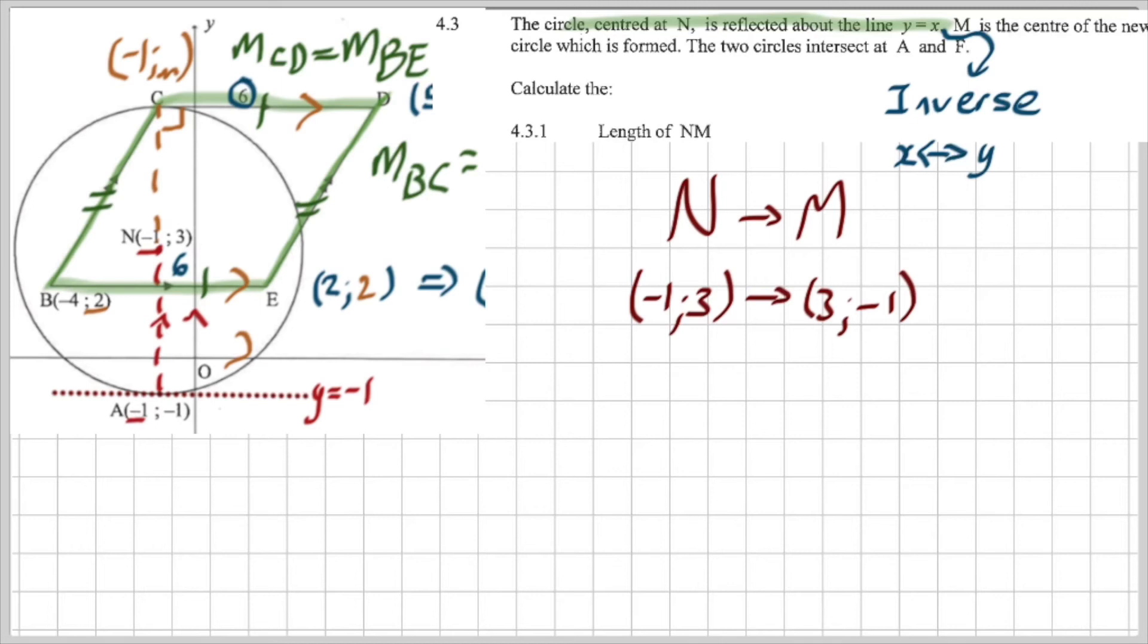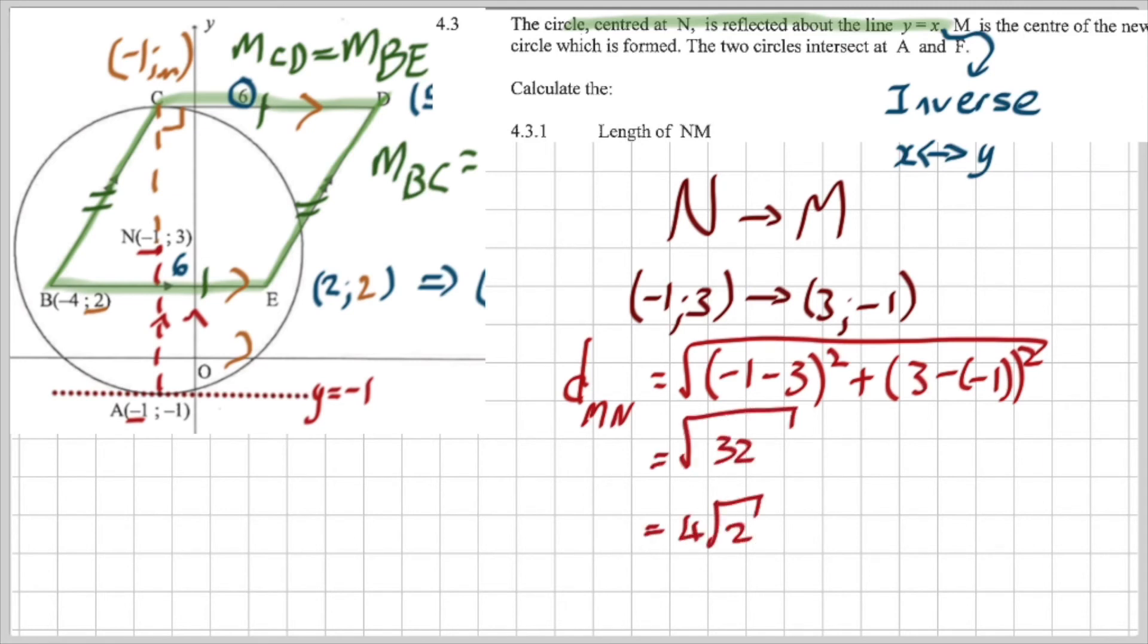So if I take this and I do my inverse operation, it means that to go from N to M, I've got to swap my X and my Y coordinates. Then the actual question is, determine the length of NM. So I'm just going to go to my distance formula and substitute it in and get an answer of four root two. I love to keep it in simplest third form because it's like super accurate. It's super accurate. I'm not rounding off or anything. This is it. As simple and as easy as that.